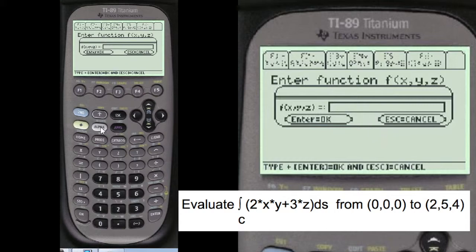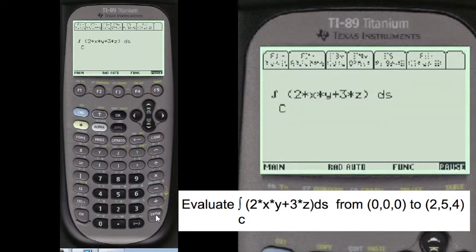We're going to enter our function. You have to press alpha before you enter anything into these empty lines here. I'm going to press alpha, 2 times X times Y plus 3 times Z. Again, I'll show you what you've entered. You can change it if you've made a mistake. Looks pretty good.